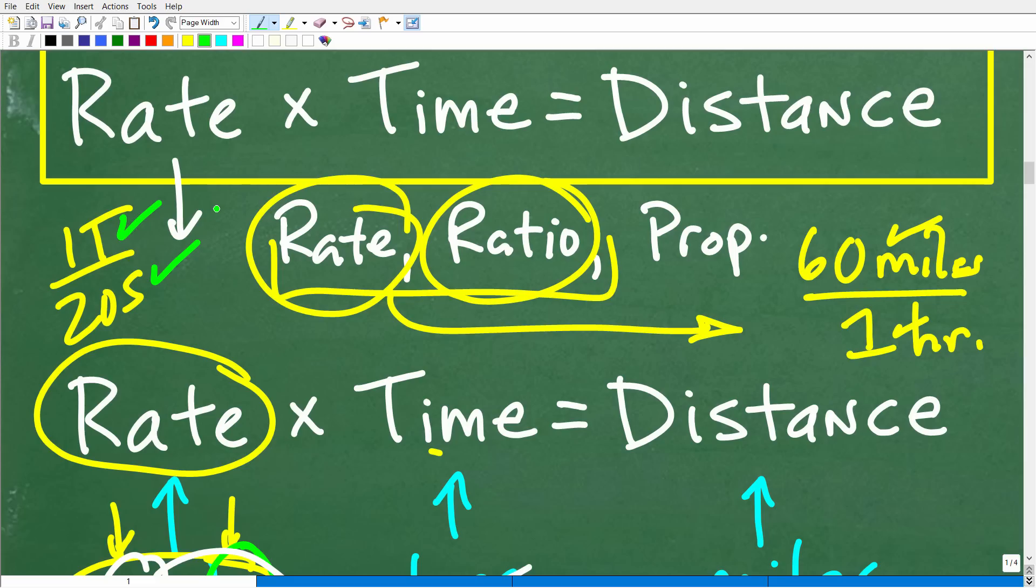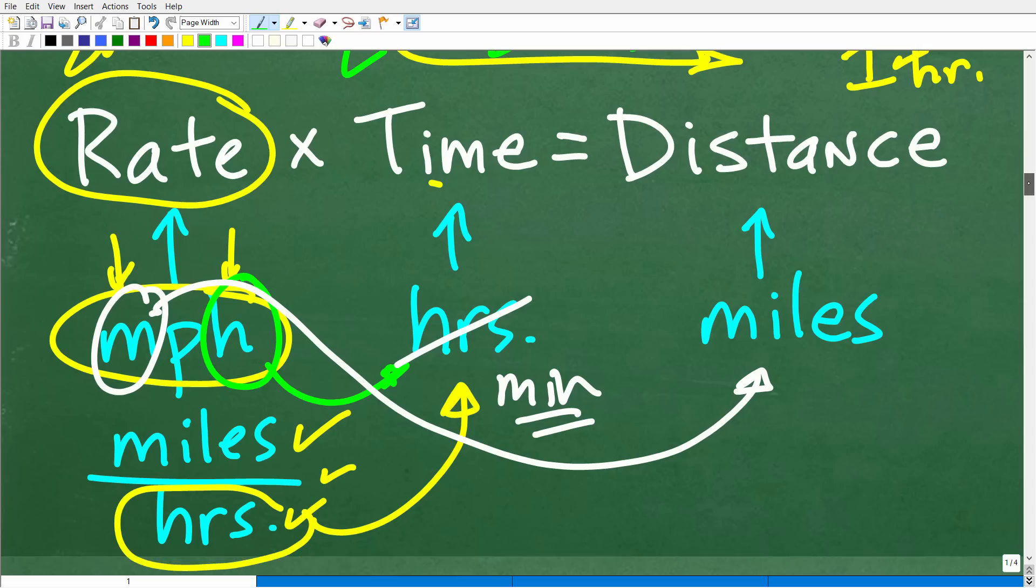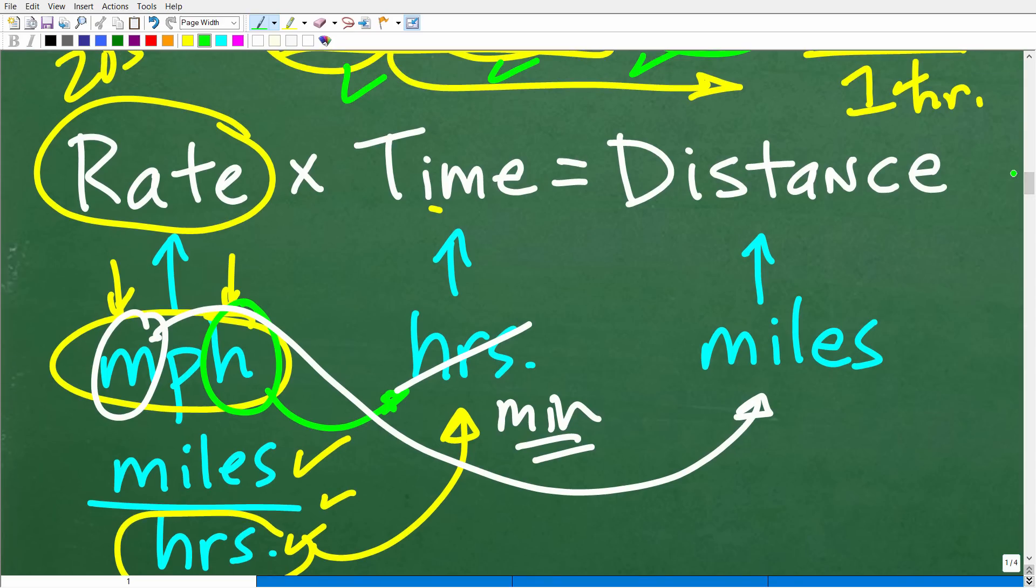Okay, so that's what rates and ratios are. They are fractions and proportions are two equal fractions. Okay, so all this stuff you need to keep in mind. Anytime you hear rates or ratios, all these things should pop up in your head. Okay, so now let's go ahead and apply our knowledge here of this formula to solve the problem.